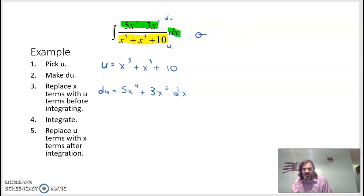So when I rewrite it, it will look like the integration of 1 over u du. So be careful because that's not a power rule integration. It is a natural log integration. So 1 over u integrates to the natural log of u. And we'll put a plus C.